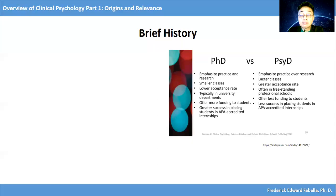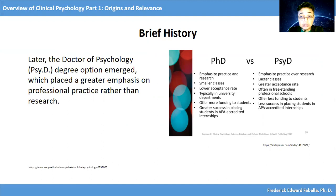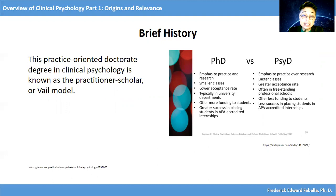Later, the doctor of psychology degree option emerged, which placed a greater emphasis on professional practice rather than research. The practice-oriented doctorate degree in clinical psychology is known as the practitioner-scholar or Vail model. So we now see that there are two branches: PhD is more on research while PsyD is more on clinical practice.